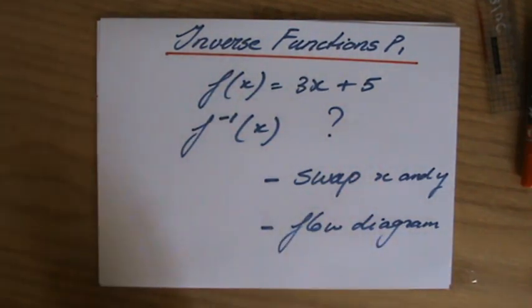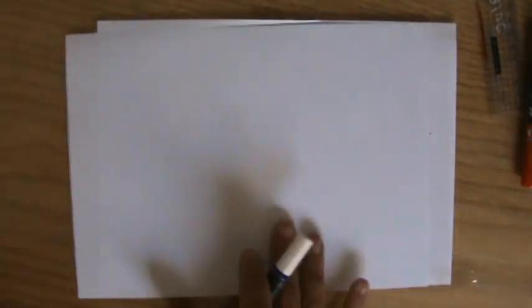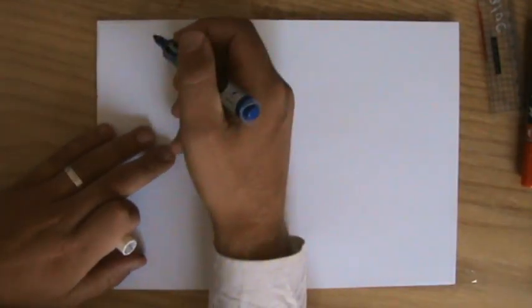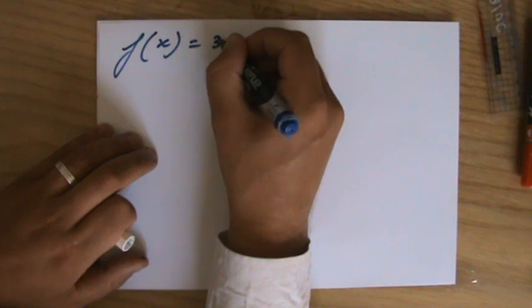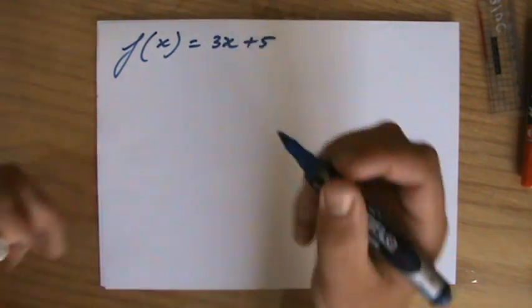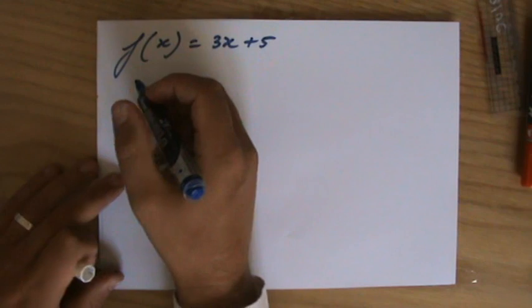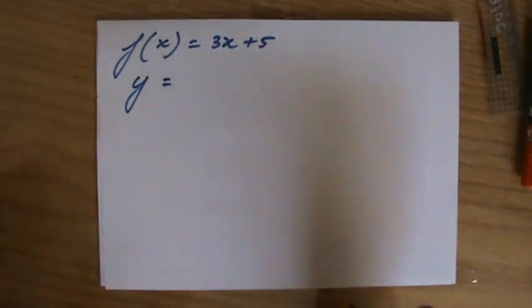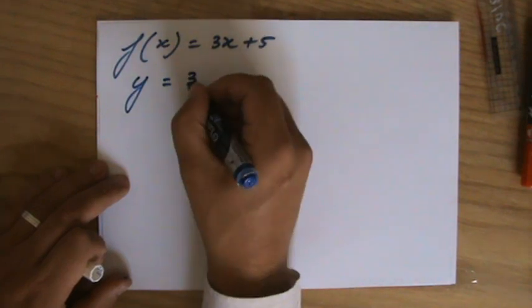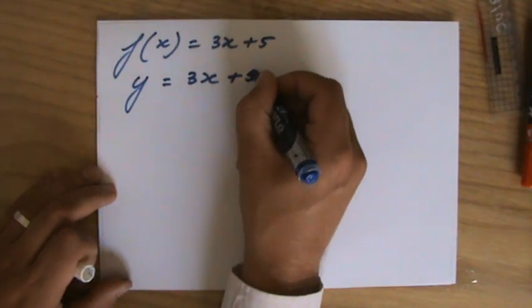Now f(x) equals 3x plus 5, and I have to find the inverse. I'm going to do that by interchanging x and y. Rather than f(x), I'm going to write it again in the classic notation. Let's put it that way: y equals 3x plus 5.